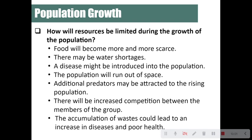Additional predators may be attracted to a rising population, seeing a dense area as an all-you-can-eat buffet. There will also be increased competition between members of a group fighting over scarce food and water to protect their families. The accumulation of waste can lead to increased disease and poor health — this was actually a factor in the beginning of the bubonic plague in England, where waste in the streets allowed disease to run rampant and many people died.